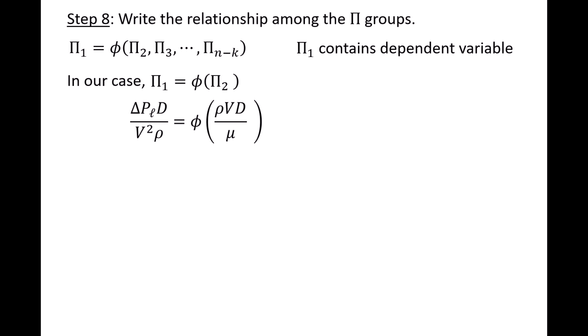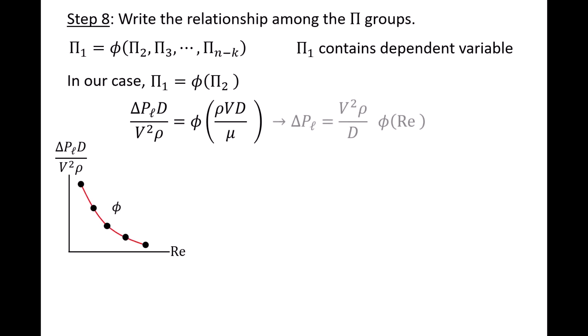At this point, we would have to conduct experiments to find that function phi. We could create an experiment where we vary the Reynolds number, perhaps by varying the flow speed v, and observe the change in the quantity delta PL d over v squared rho. We then perform a curve fit to the data to find an expression for phi, and rearrange the equation to find the expression for our dependent variable delta PL, which is v squared rho over d times the function phi.